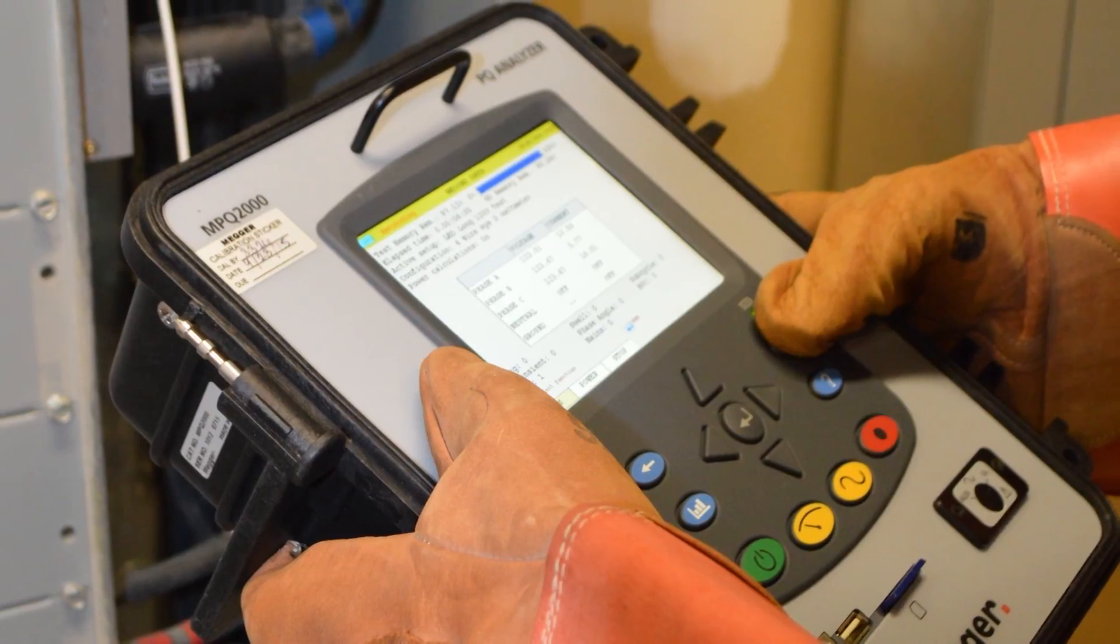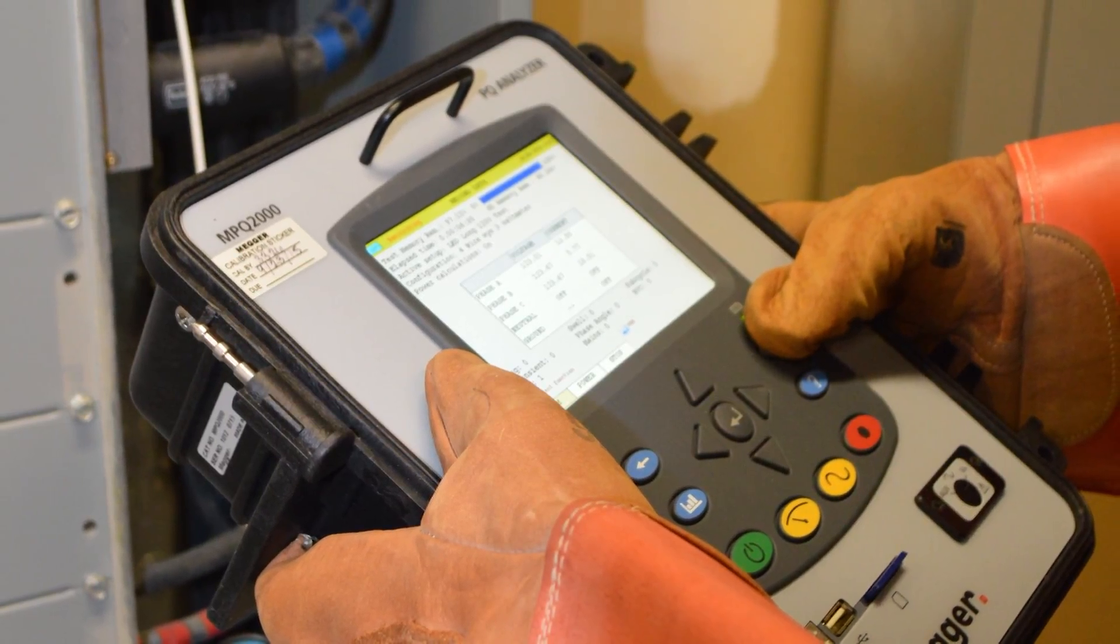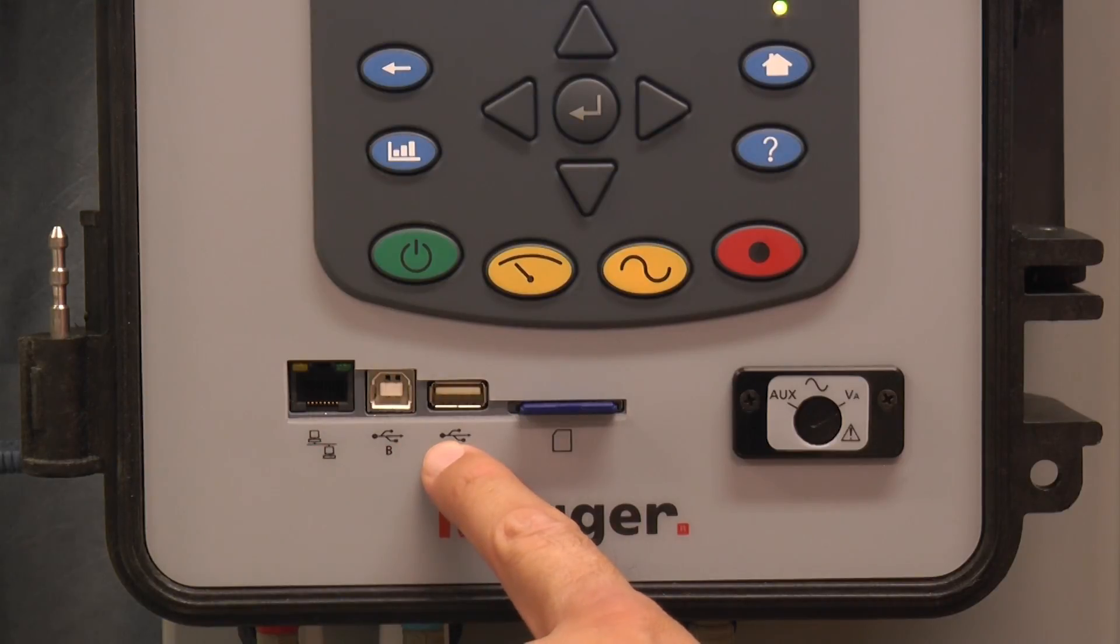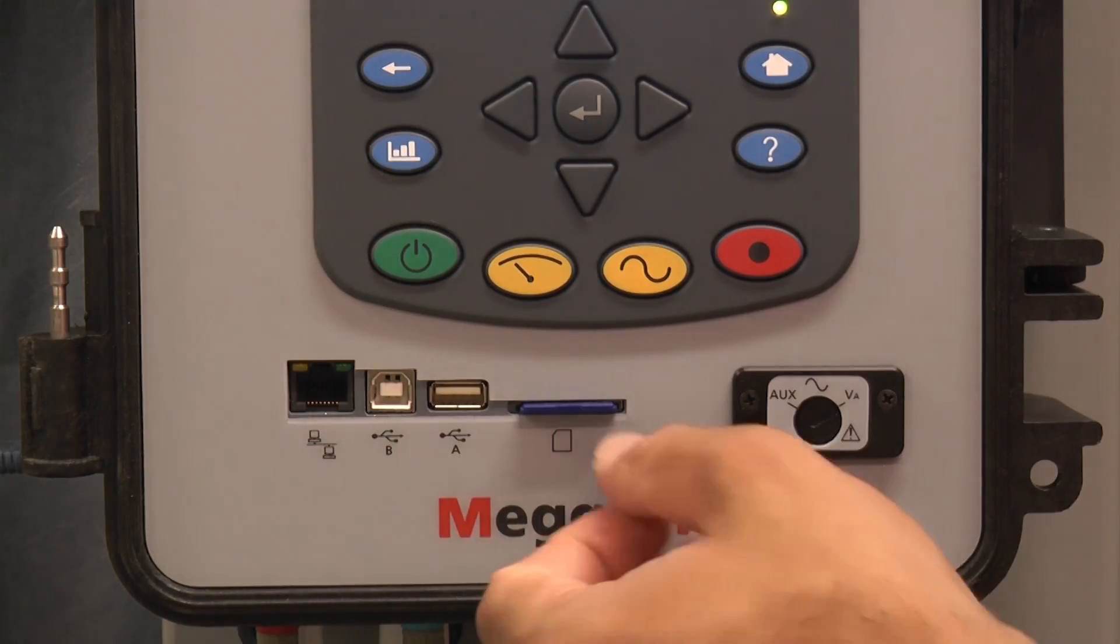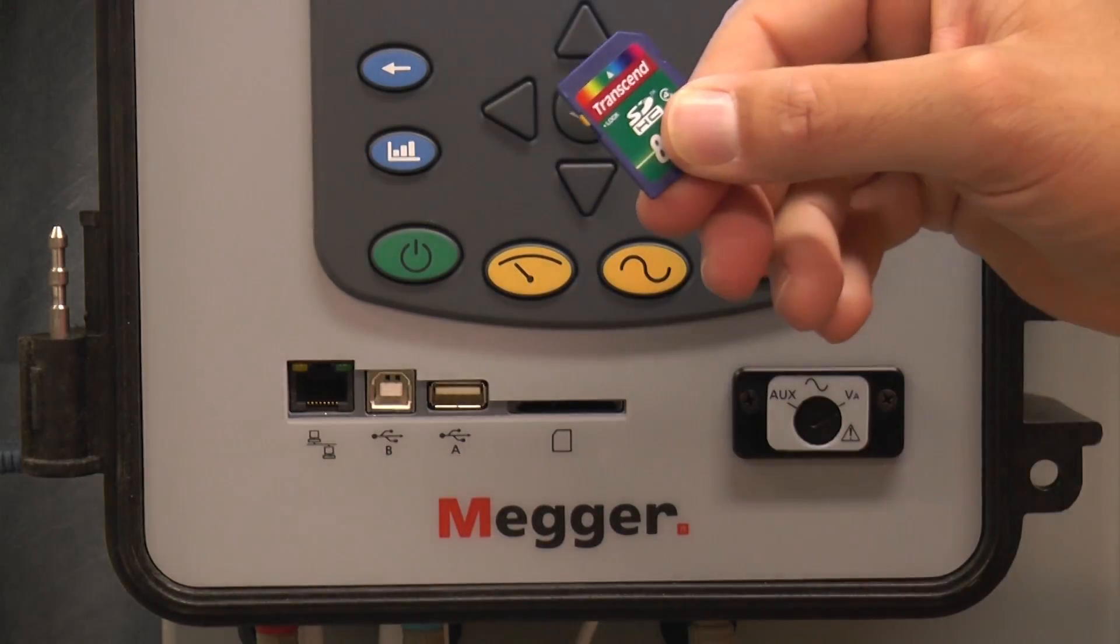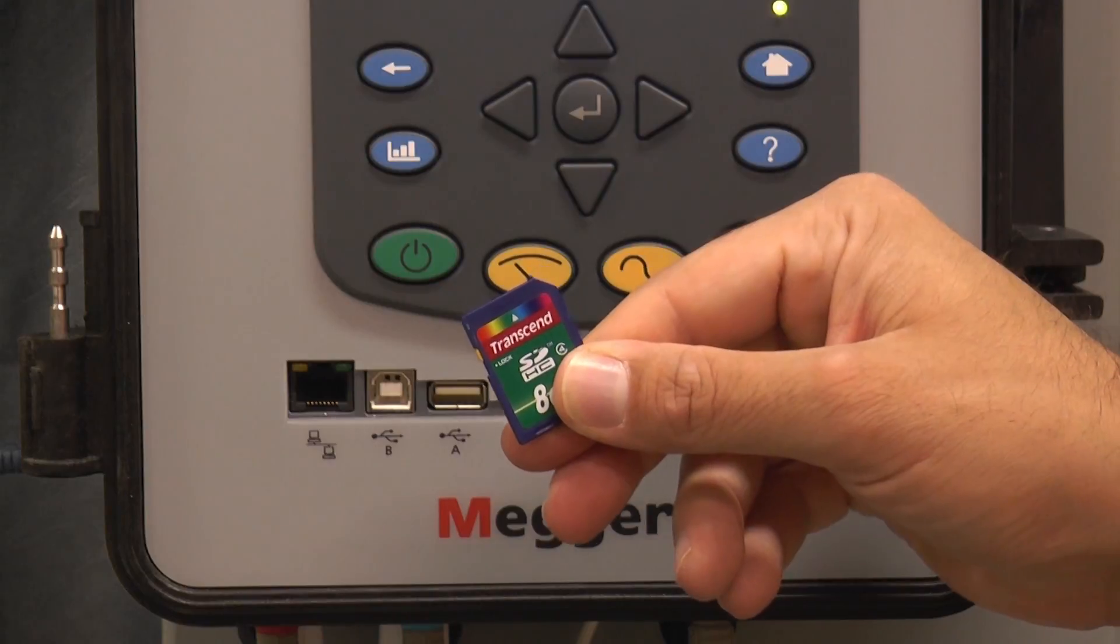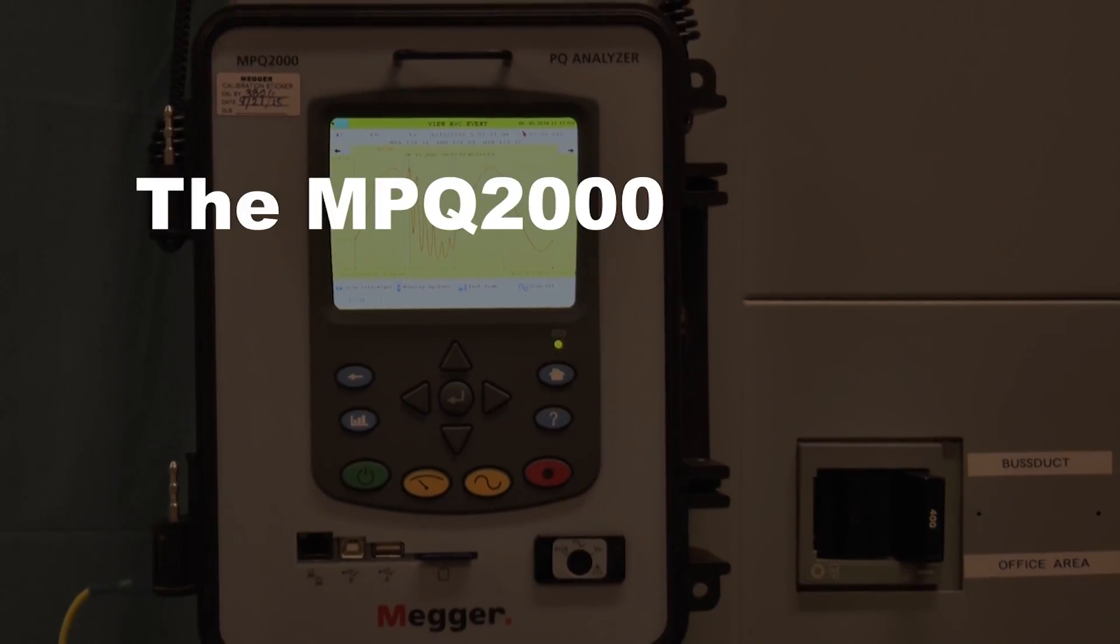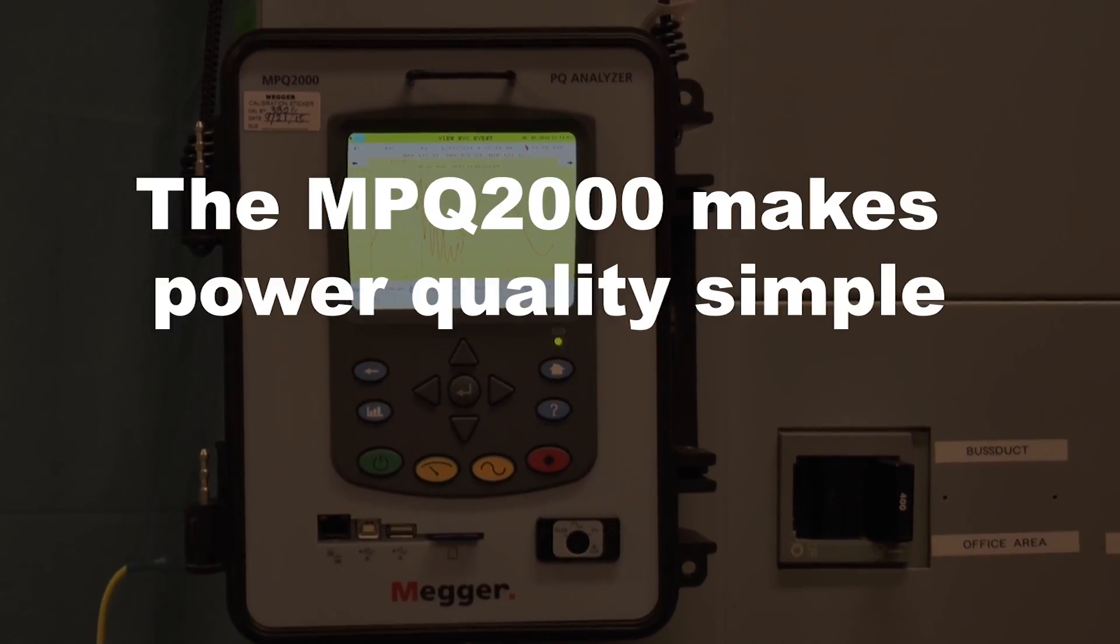The data can be transferred to a PC via a USB port, an Ethernet port, or a USB stick, or simply remove the SD card and transfer the data for further analysis and reporting. The MPQ-2000 makes power quality simple.